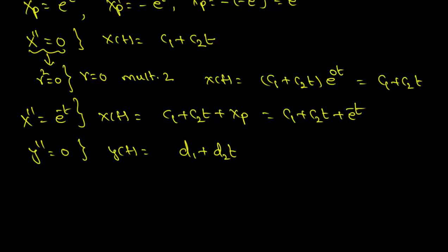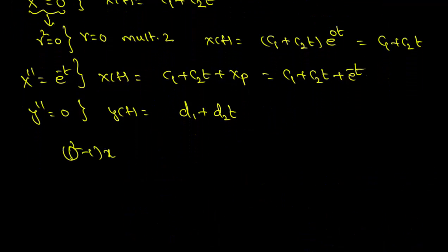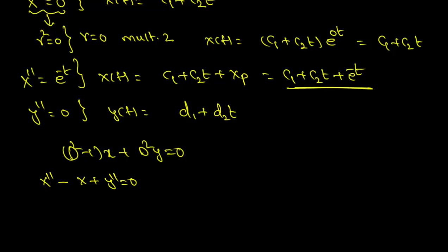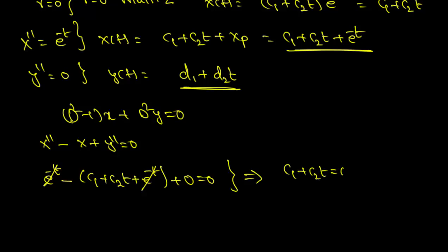Let's plug x(t) and y(t) into the second equation: (D² − 1)·x + D²·y = 0, that is x'' − x + y'' = 0. Plugging in: x'' = e^(−t), x = c1 + c2·t + e^(−t), and y'' = 0. Canceling the e^(−t) terms implies c1 + c2·t = 0, so we can ignore those terms in the solution for x(t).